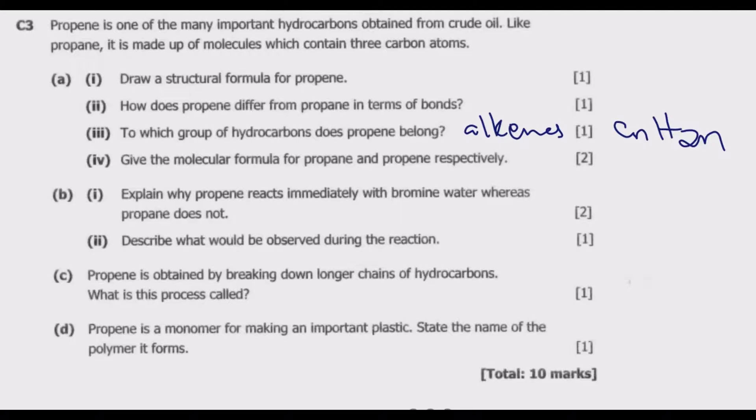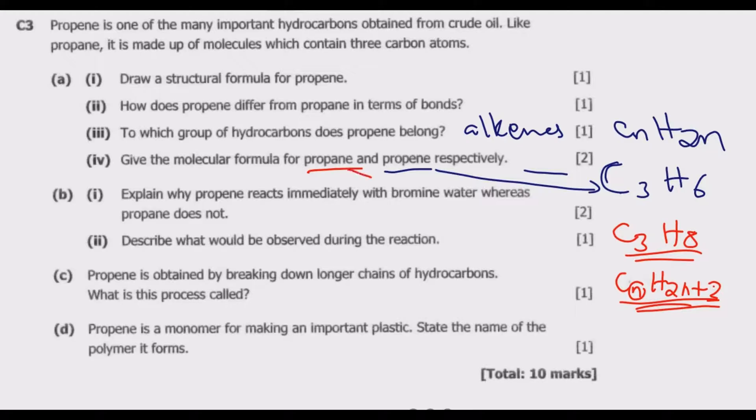Question (a)(iv): Give the molecular formula for propane and propene respectively. The formula for propene is C₃H₆, and for propane is C₃H₈, because propane follows this generic formula CₙH₂ₙ₊₂. When C is 3, we put 3 here and get this formula.